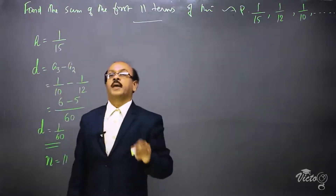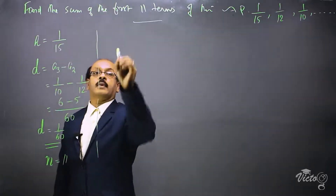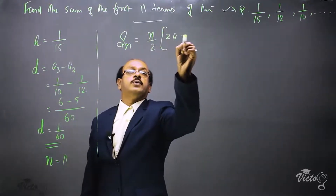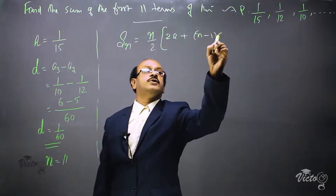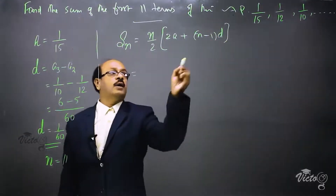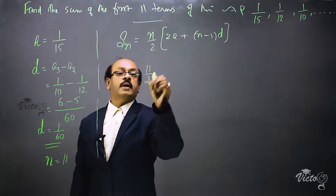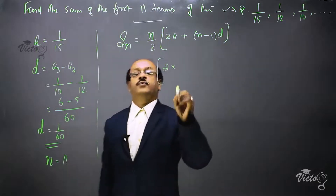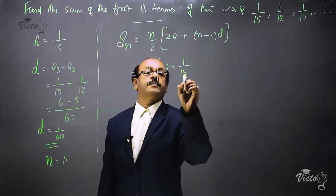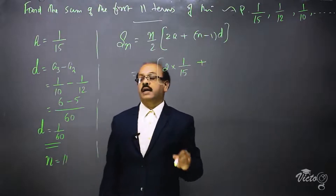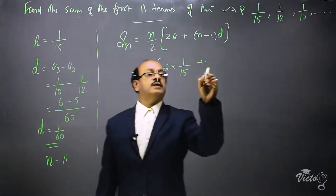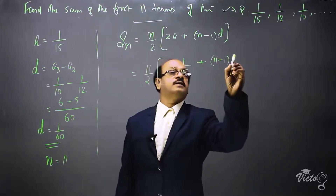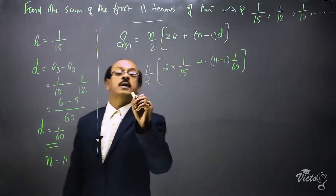It is given in the question. Now we are going to find the sum. The formula is Sn = n/2 into [2a + (n−1)d]. The value of n is 11, so it is 11/2 into [2 into a]. The first term a is 1/15, plus n minus 1 — that is 11 minus 1 — into d, which is 1/60.